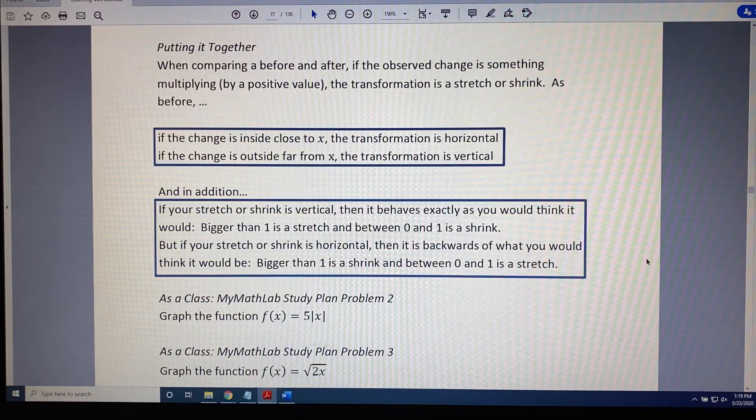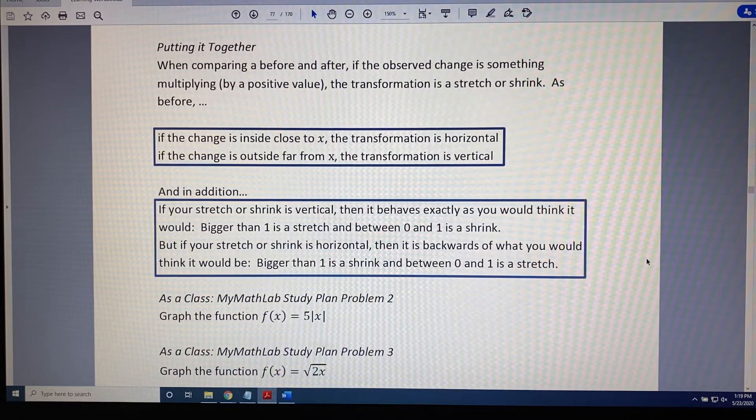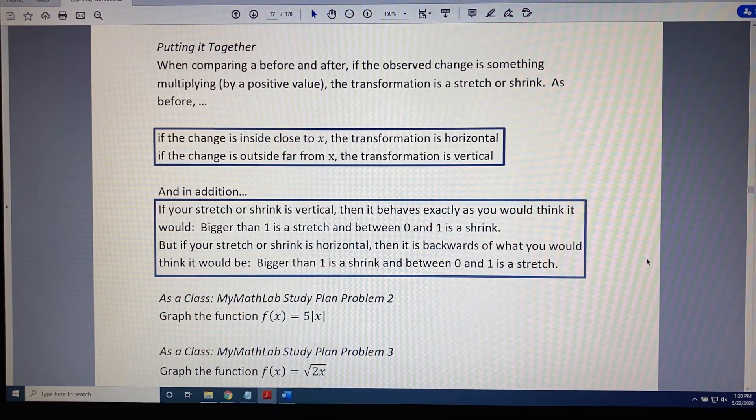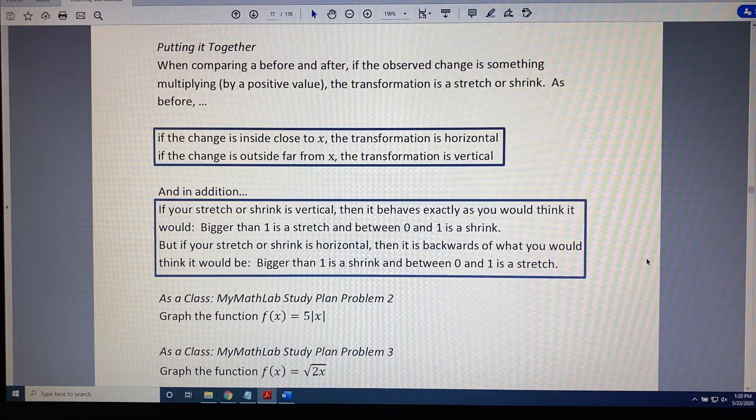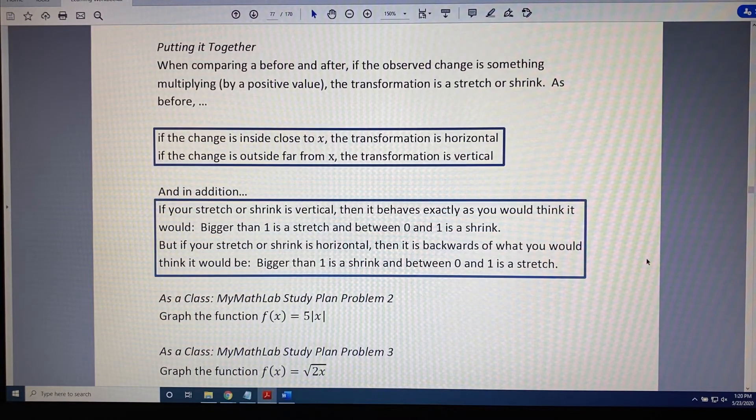And when trying to determine if it is a stretch or a shrink, let's observe the following. If your stretch or shrink is vertical, then it behaves exactly as you would think it would. If the number is bigger than 1, like 2 or 3 or 5 or 10, then it is a stretch. But if the number is between 0 and 1, like 1 half, 1 third, 0.3, 0.9, 3 fifths, then you're dealing with a shrink.